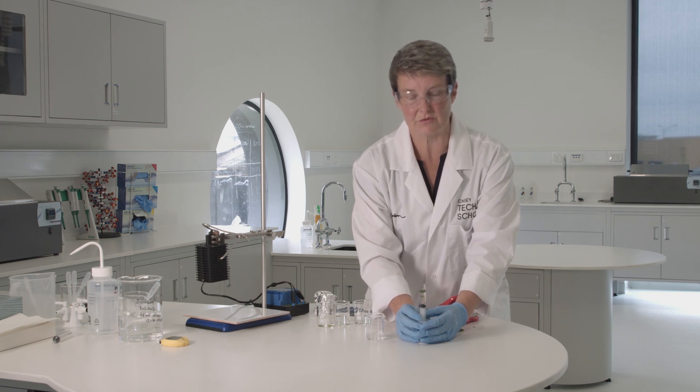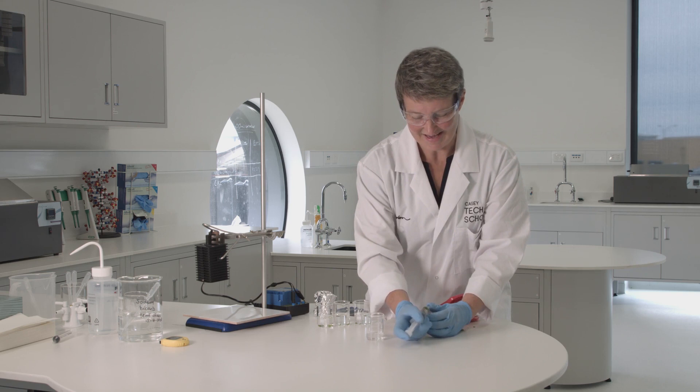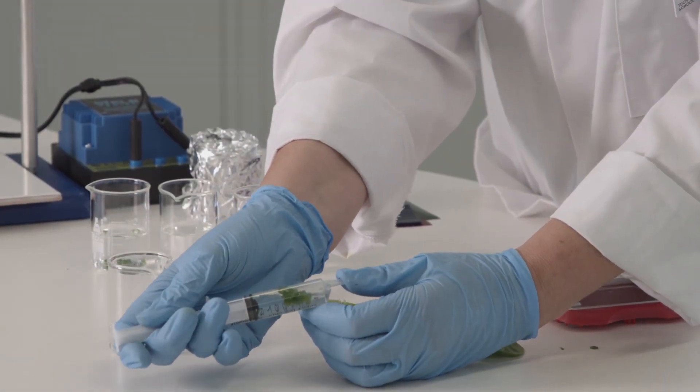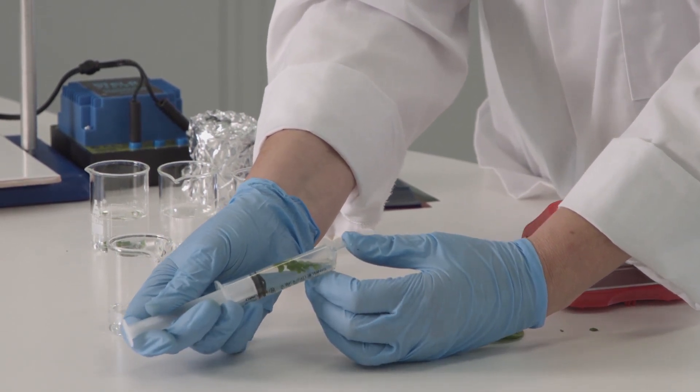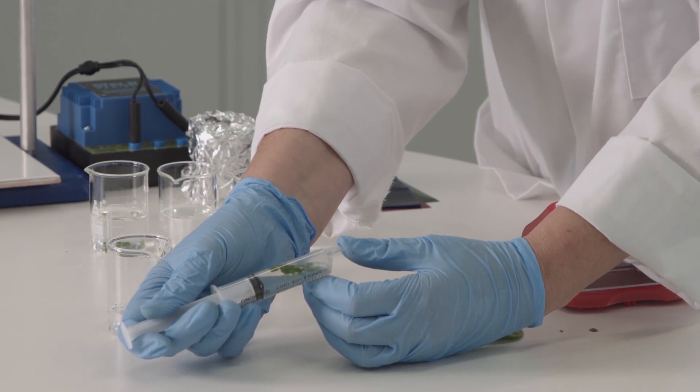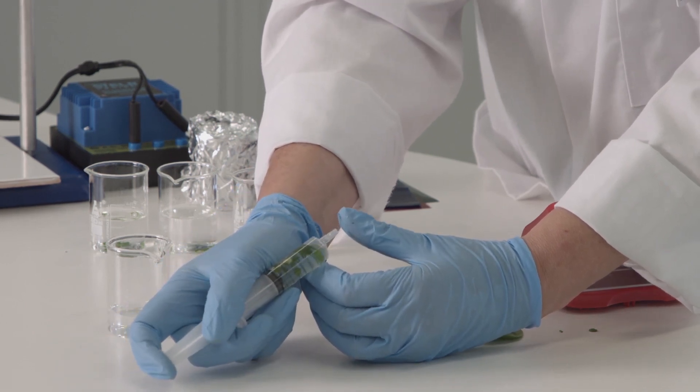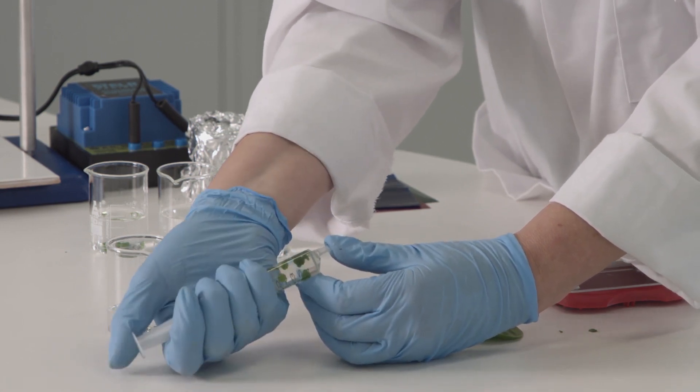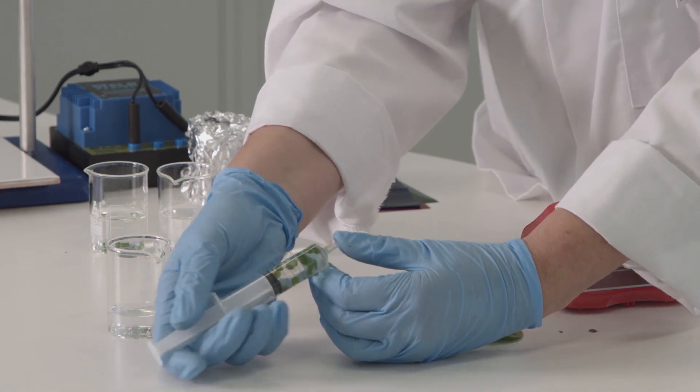So what I'm going to do is cover up the end of it so I don't squirt myself, and I'm going to pull to expand the air bubbles. That'll make the air bubbles expand out of the leaf disk, and then I'm going to push and that will push the liquid into those spaces instead.